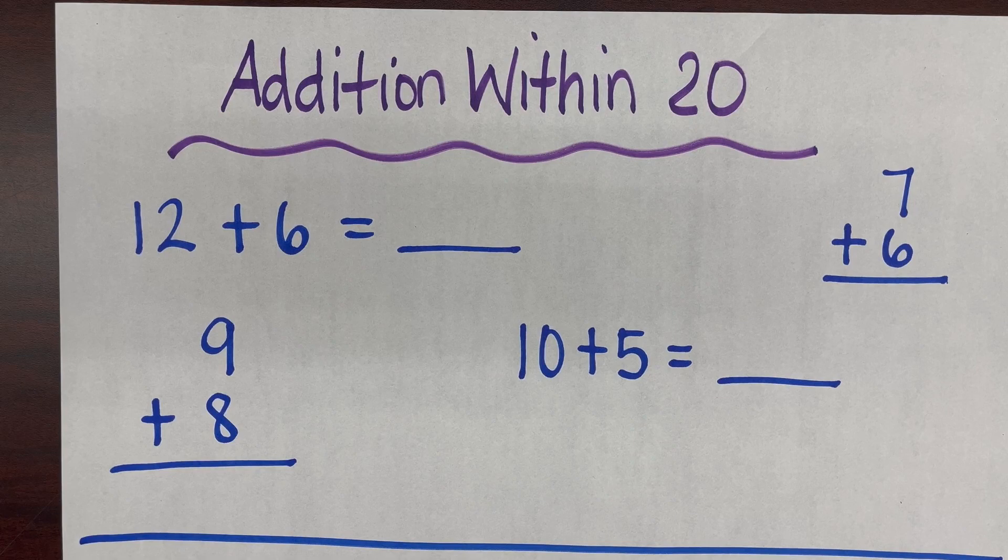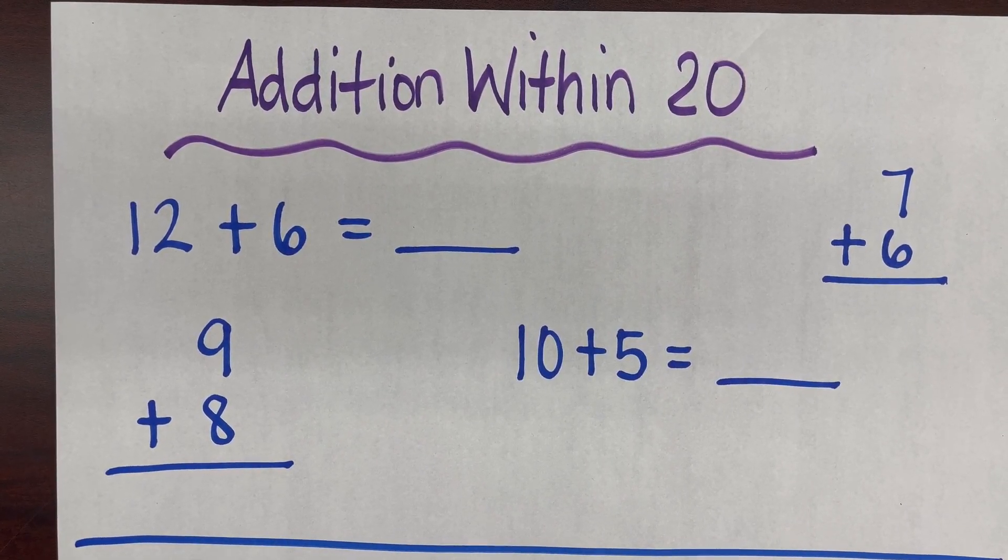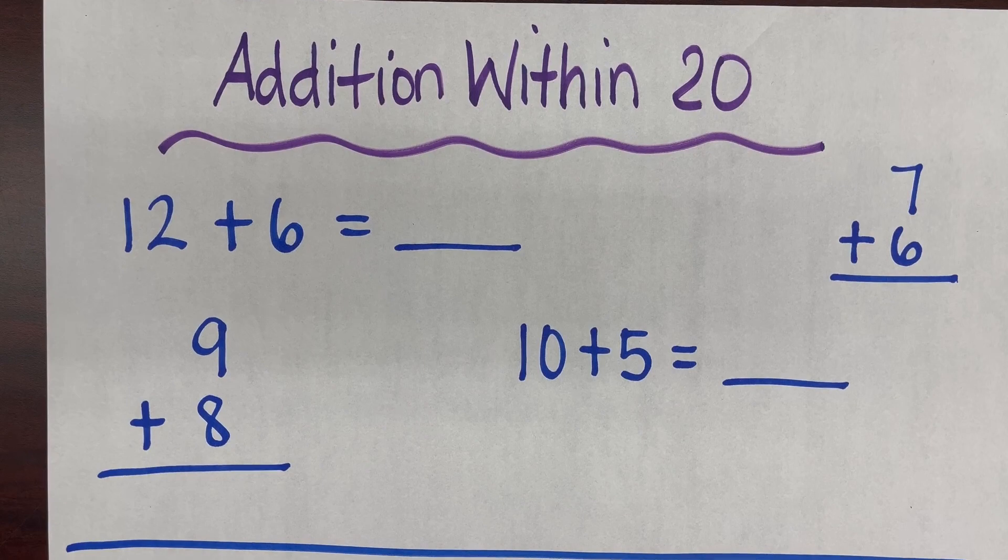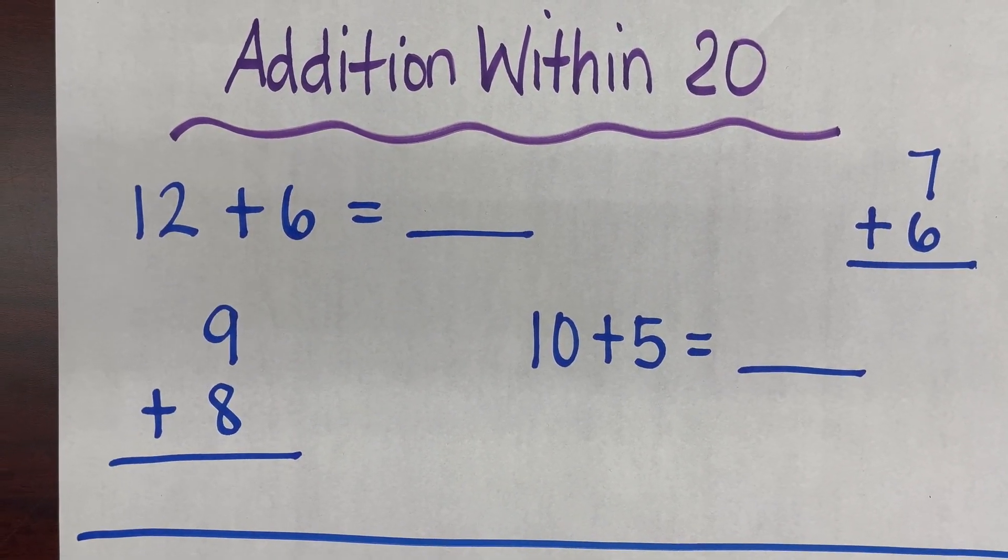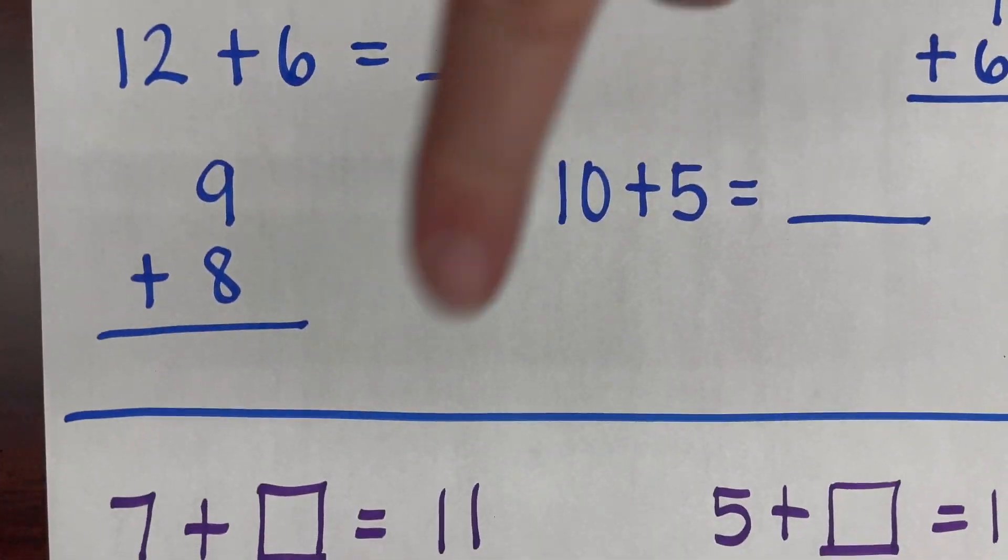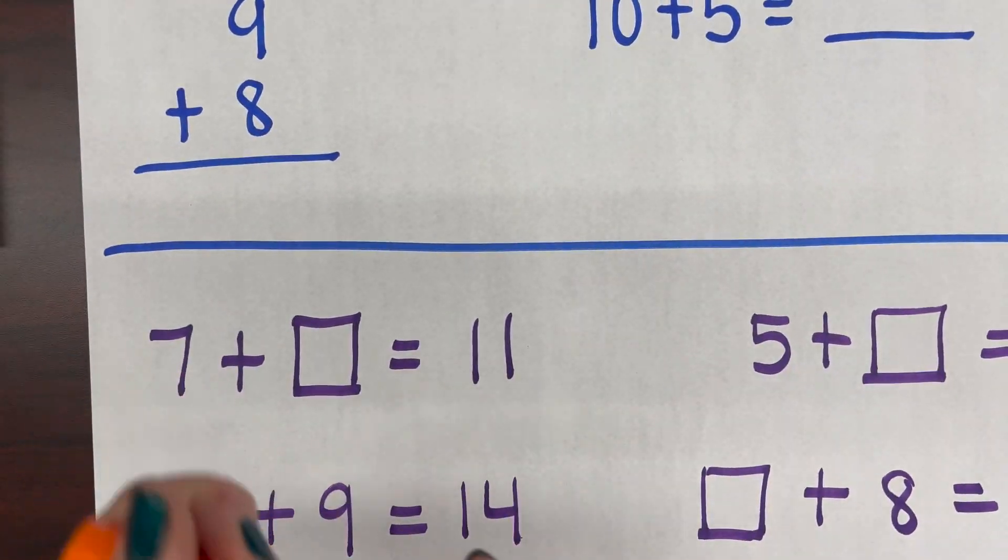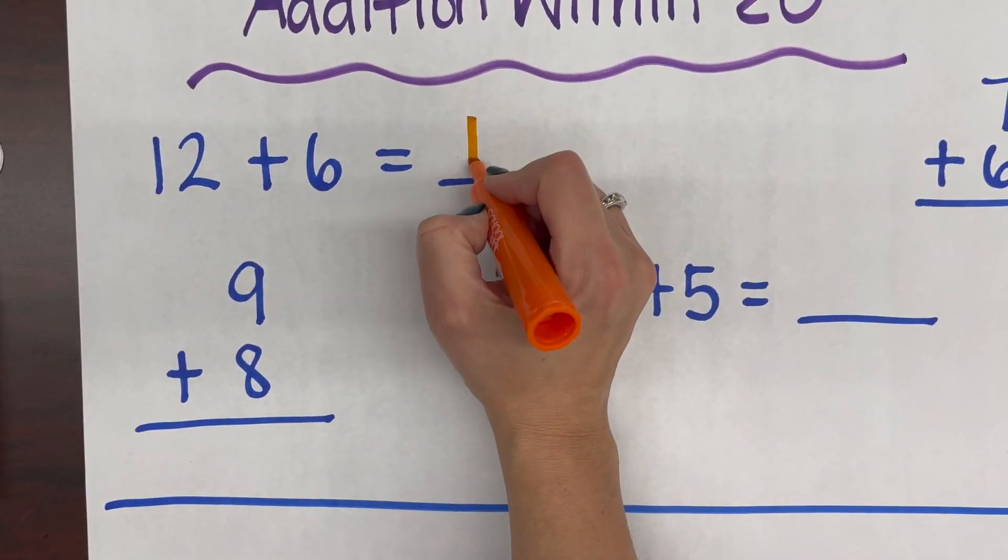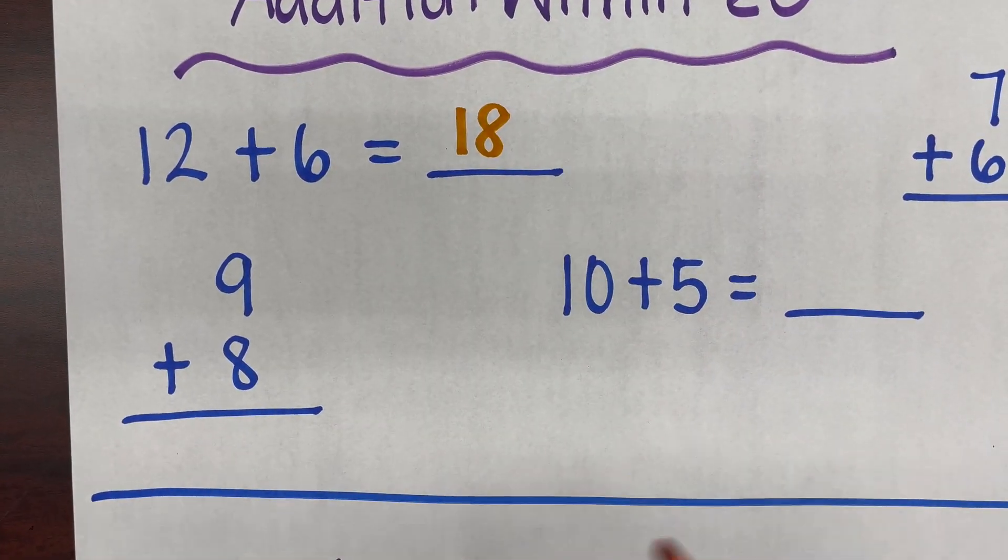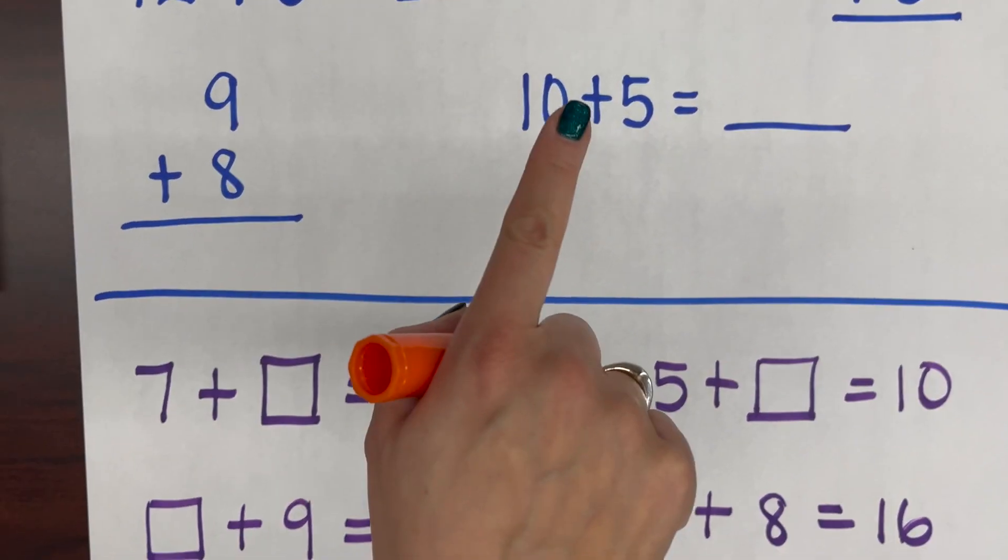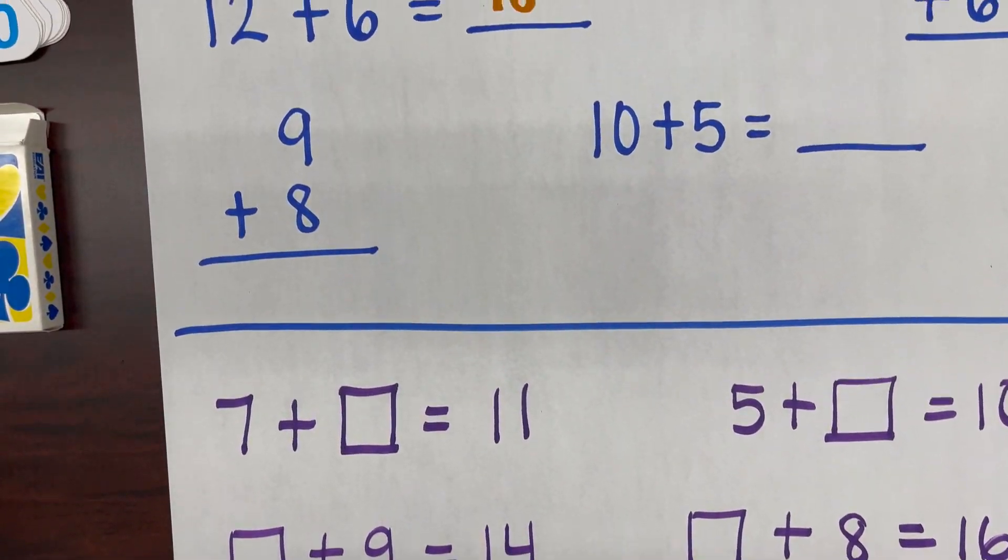When looking at the problem 12 plus 6, I might use the catch and count on strategy, so I'll grab 12, hold 12 in my head and count on 6 more. So 12, 13, 14, 15, 16, 17, 18, and so my answer would be 18. So again what I did was I caught 12 and I added 6 more. I used my fingers which is totally appropriate at this level.